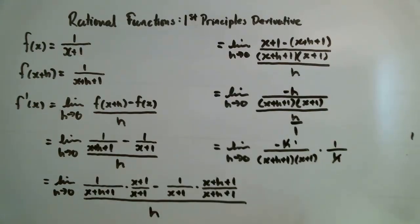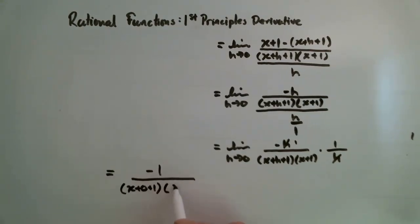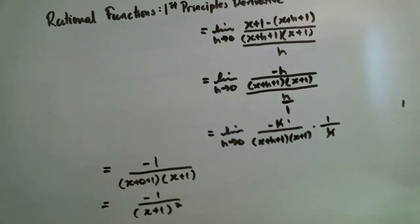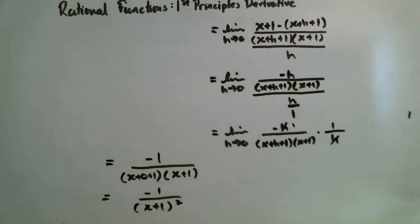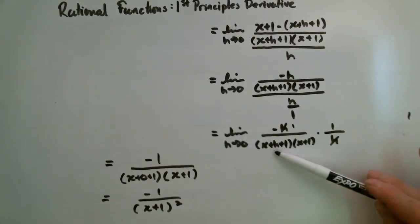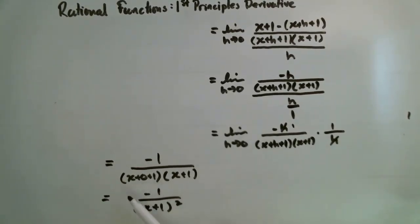Now I'm ready to apply my limit here. When I set h equal to 0 by applying my limit, I end up with (x+0+1) times (x+1), which is just negative 1 over (x+1) squared.